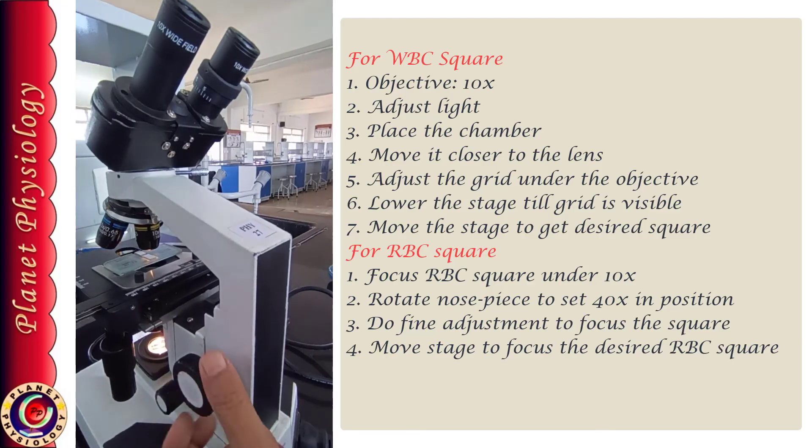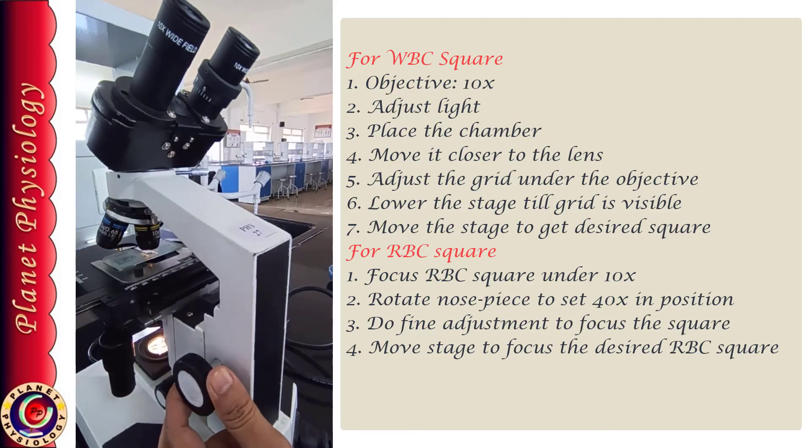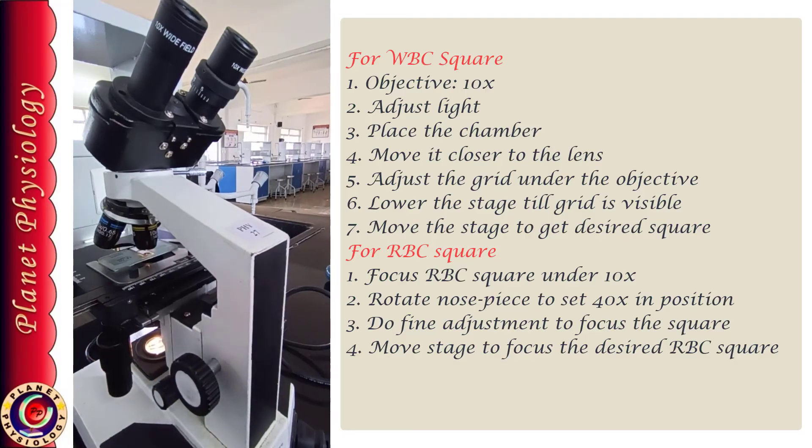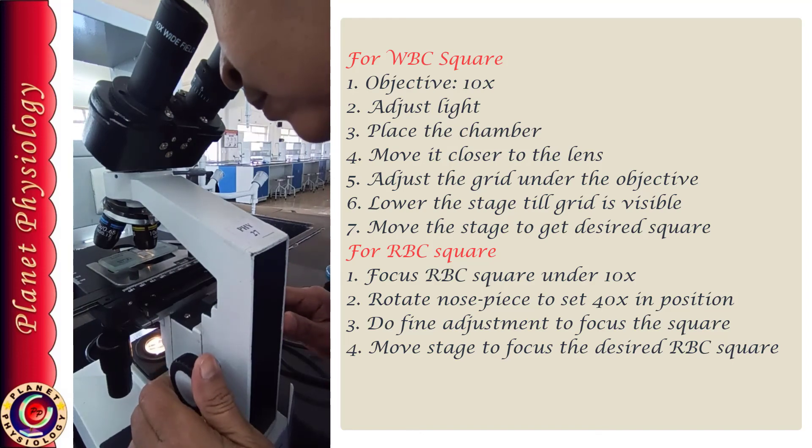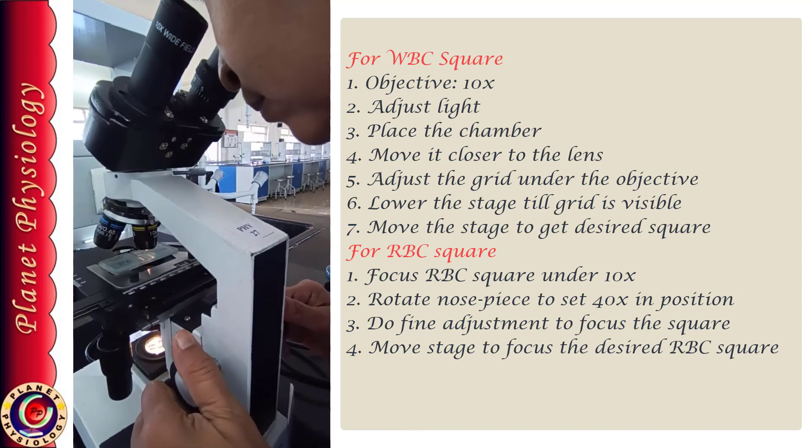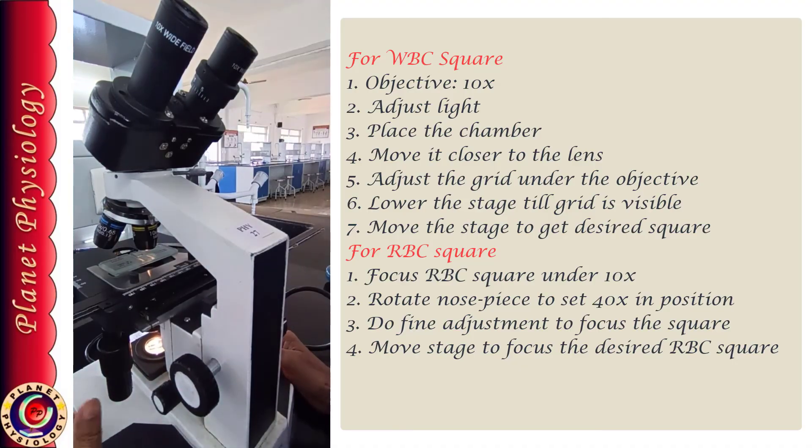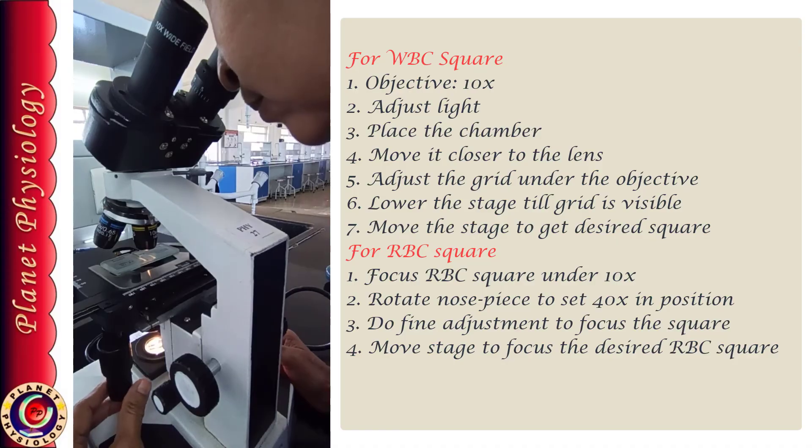Adjust the stage to get the grid under the objective. Now see through the eyepiece and gradually lower the stage till you clearly see some part of the grid. Do not use mechanical screws. Now do not touch coarse or fine adjustment and move only the stage screws to traverse the grid till you get the desired part of the chamber under the focus.